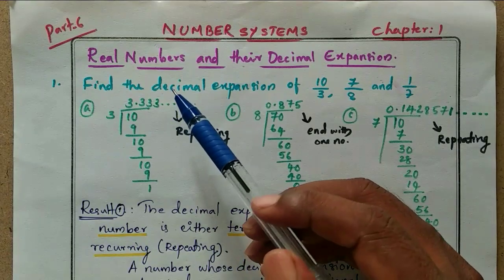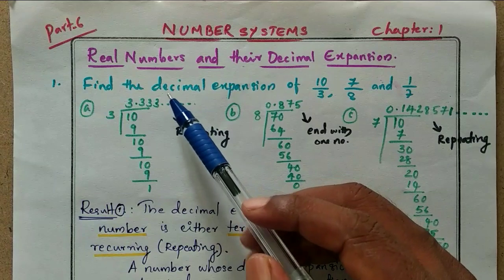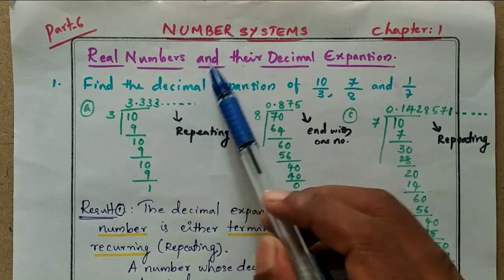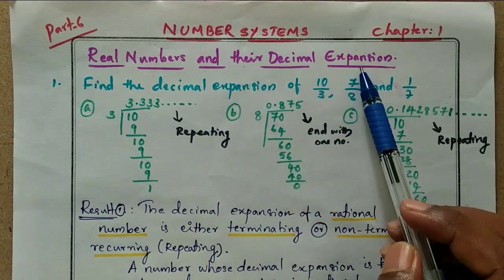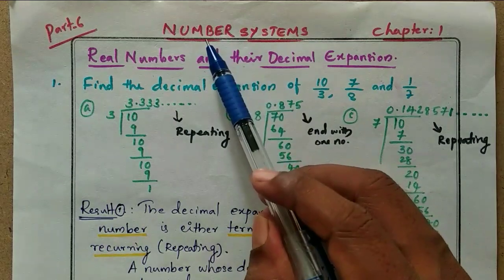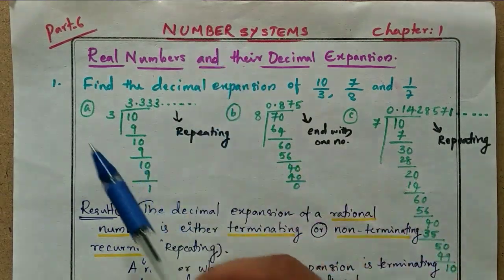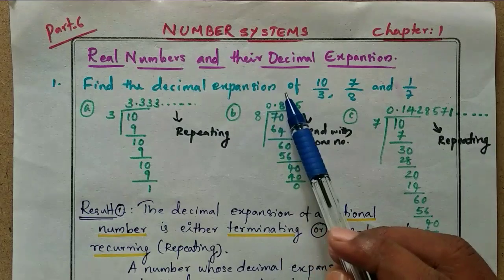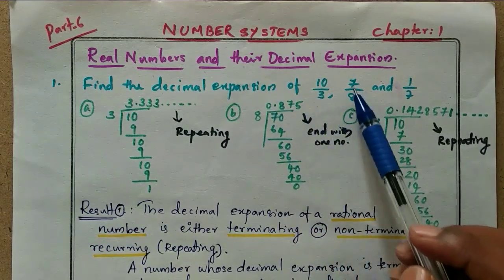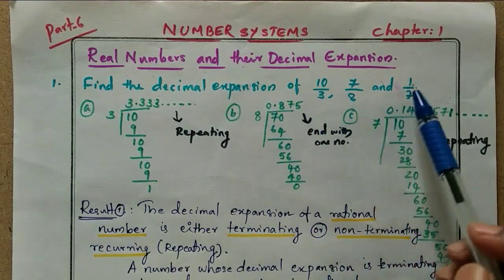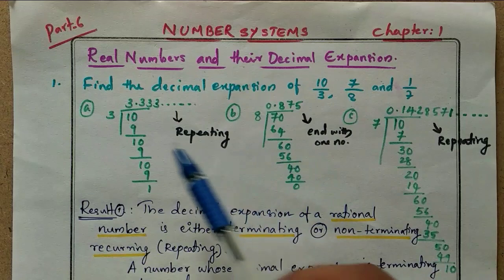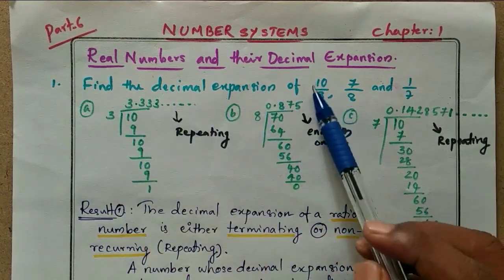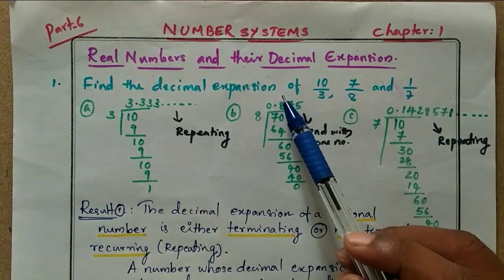Dear students, welcome to my video. We are going to start a new session on real numbers and the decimal expansion from the chapter Number System. Question number one: find the decimal expansion of 10/3, 7/8, and 1/7. You have to find out the decimal expansion of these three.